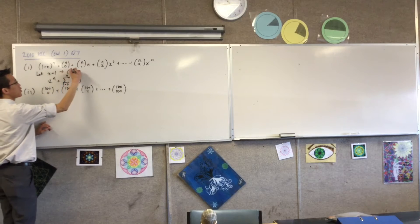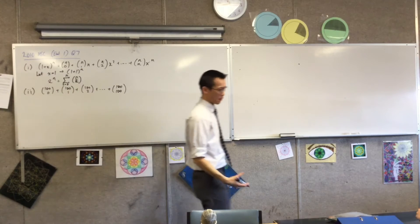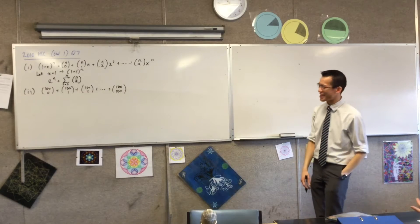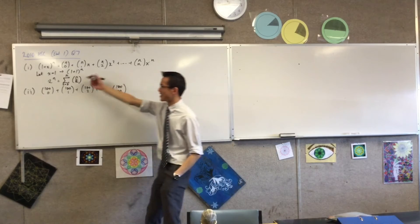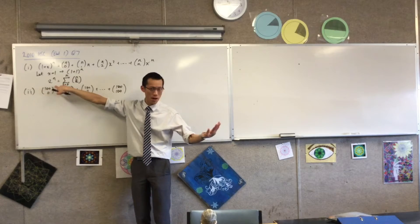And then once you've done that, you've got 1 plus 1 to the n. Don't skip on that right-hand side. How many precious seconds do you save to write 1 plus 1 instead of 2? Okay, this is given to you in the question, so you can't get marks for that, okay?